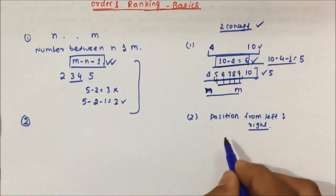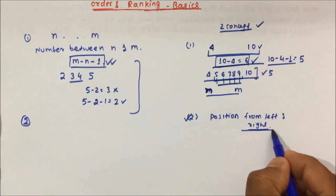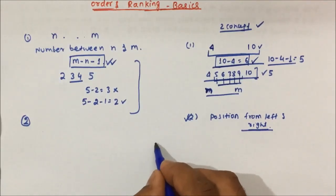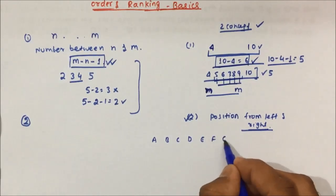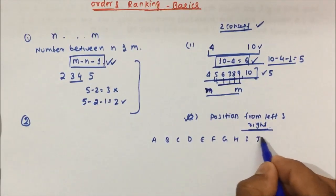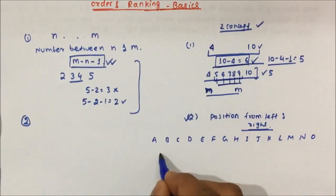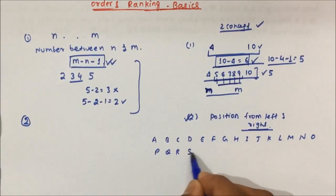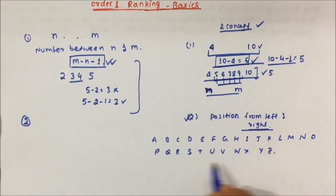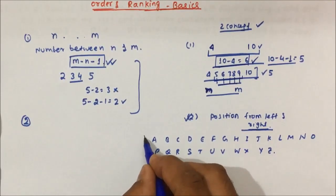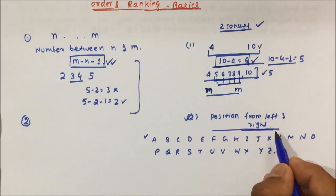What is the second concept? The second concept — they will be asking you the position from left and right. Suppose take the alphabet: A, B, C, D, E, F, G, H, I, J, K, L, M, N, O, P, Q, R, S, T, U, V, W, X, Y, Z. I have taken one example to make you understand how to calculate the position from left and right.